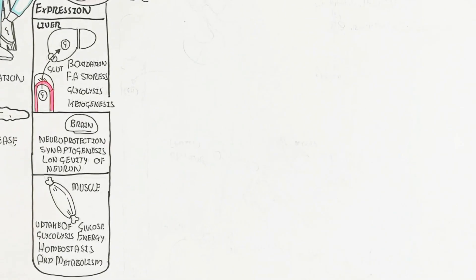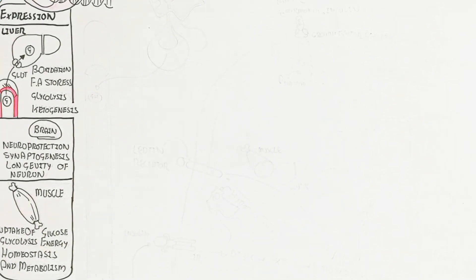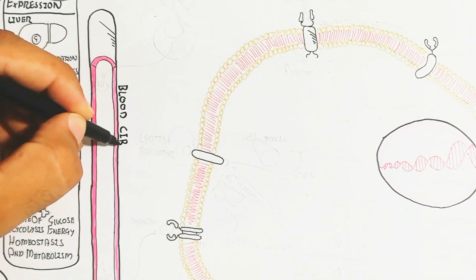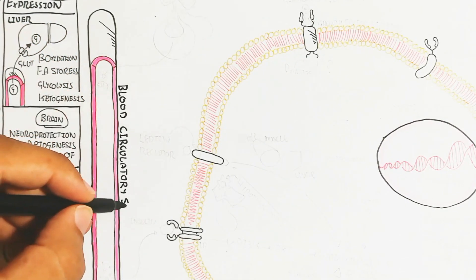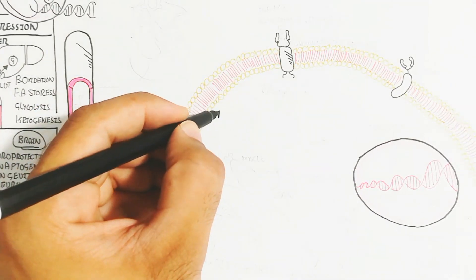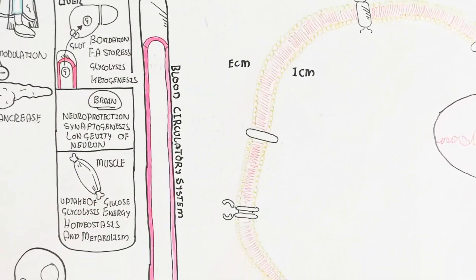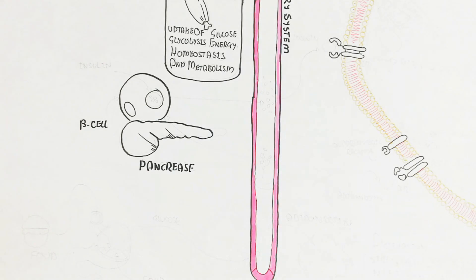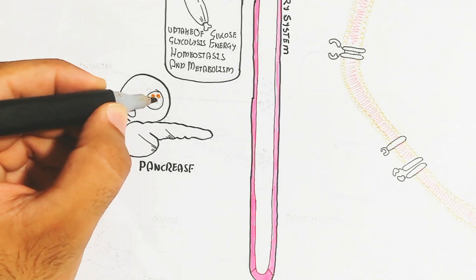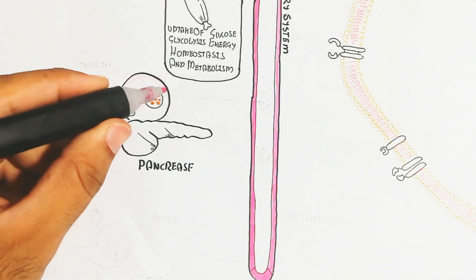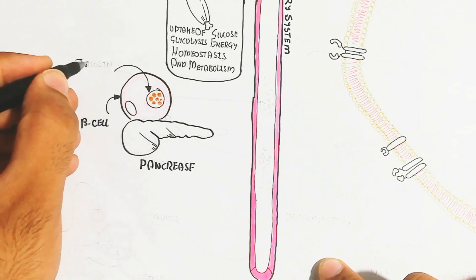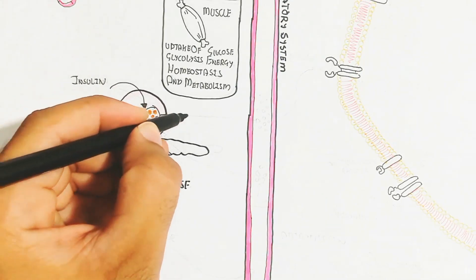During fasting, AMPK increases GLUT channel expression, which allows glucose uptake for muscle contraction through the blood circulatory system. This involves both the intracellular and extracellular matrix of the general cell. The pancreas contains beta cells, which contain insulin vesicles; when a stimulus triggers the beta cell, it leads to exocytosis of insulin into the blood.